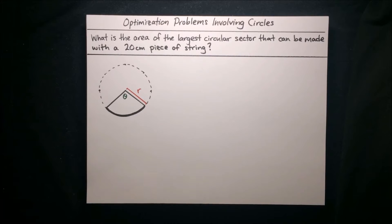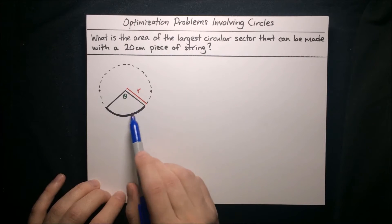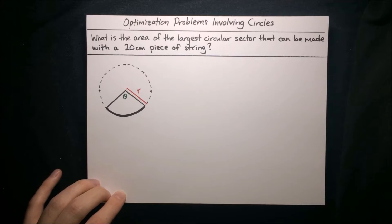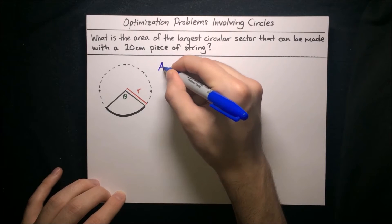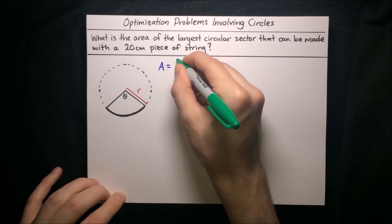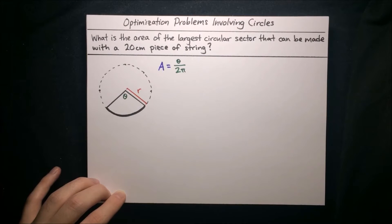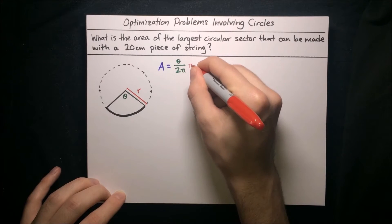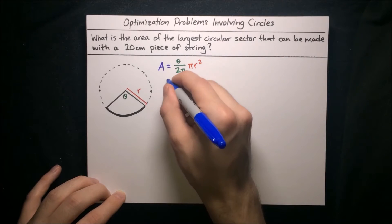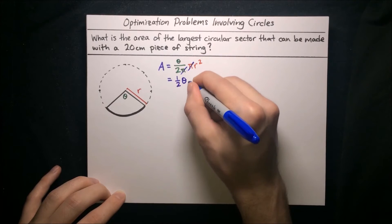Here we've got a diagram of our circular sector with radius r spanning an angle theta, and we want to maximize the area. We start by writing down an expression for the quantity we want to maximize: the area A of the circular sector. It's a portion of the area of the entire circle — theta over 2pi times pi r squared — which simplifies to one half theta r squared.